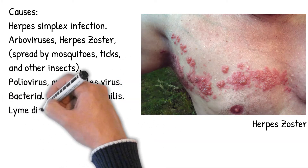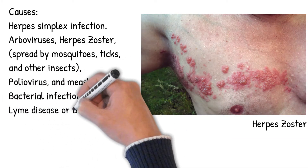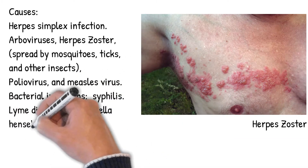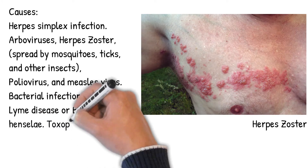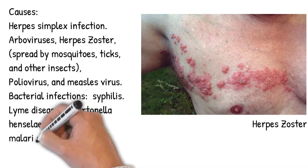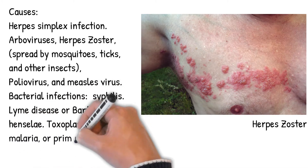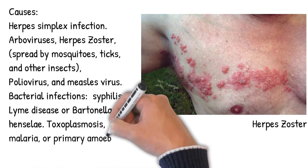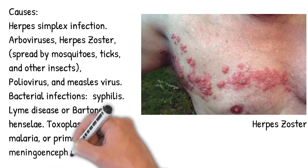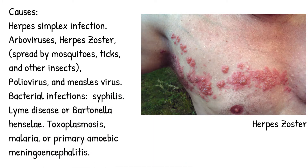Bacterial infections include syphilis, Lyme disease, or Bartonella henselae. Certain parasitic or protozoal infestations such as toxoplasmosis, malaria, or primary amoebic meningoencephalitis.